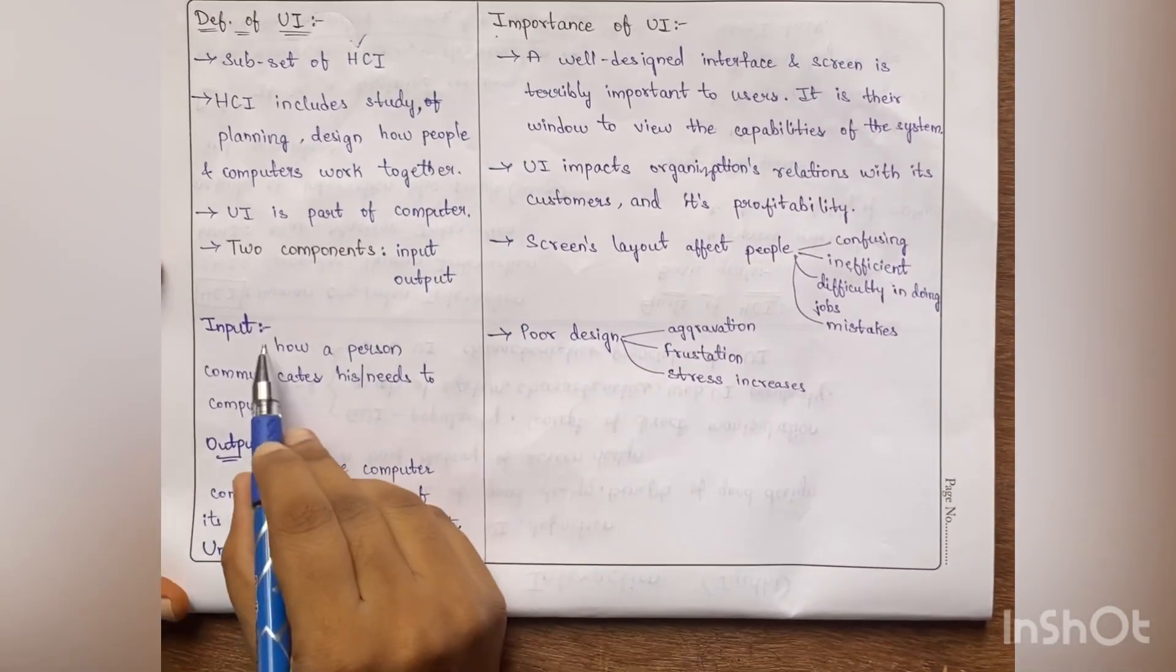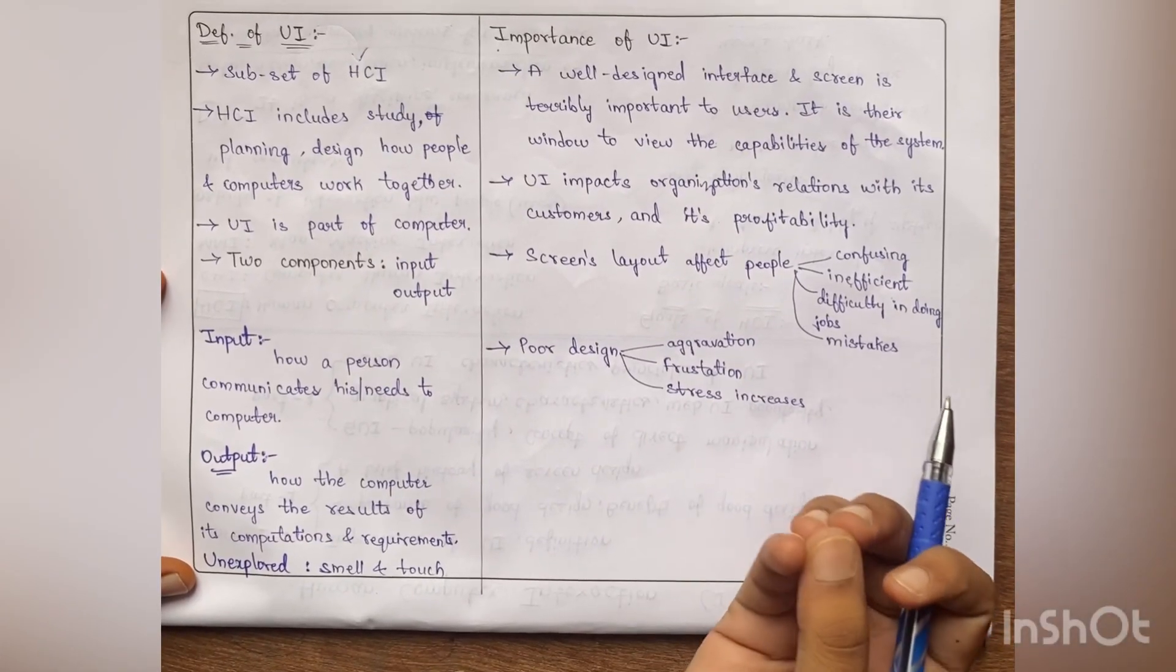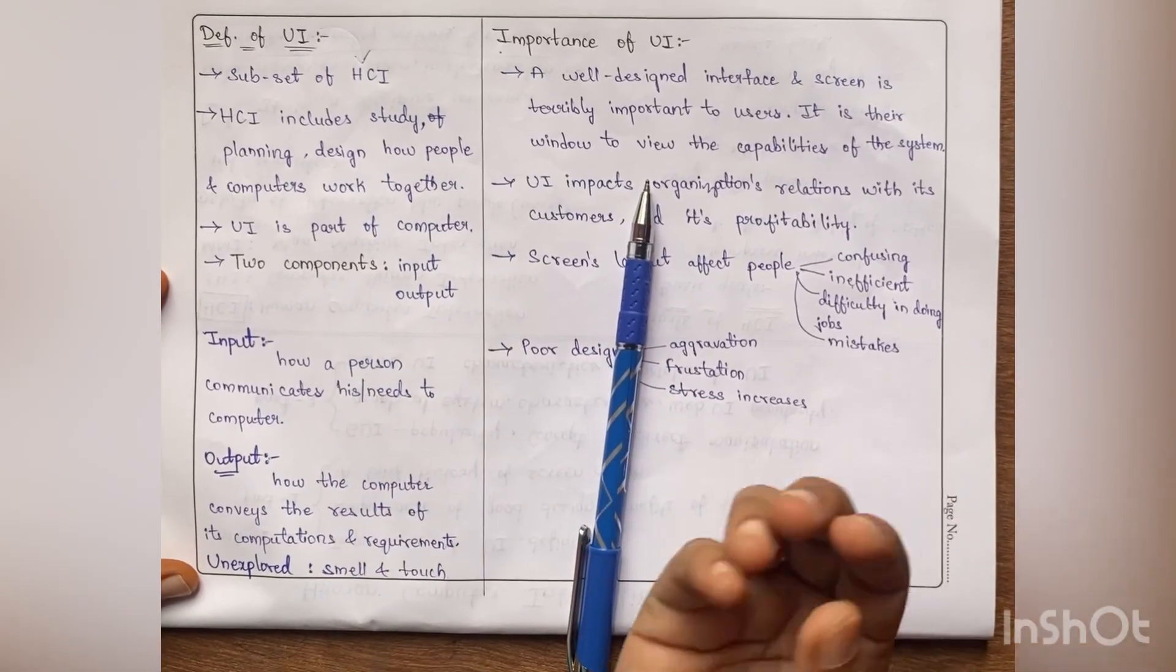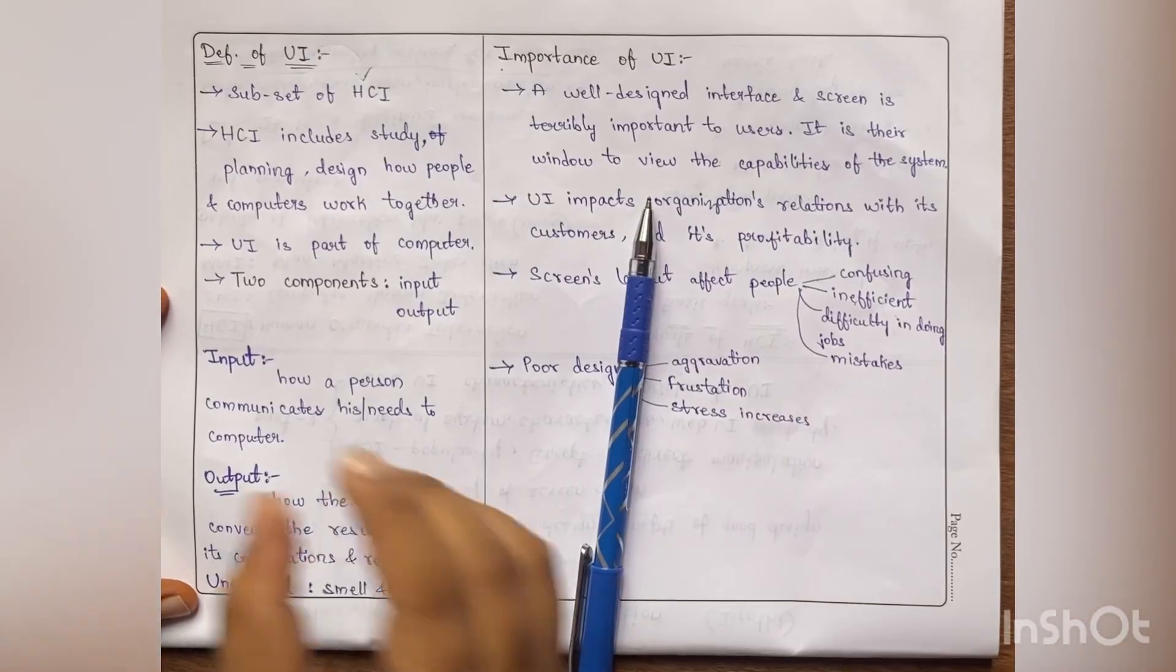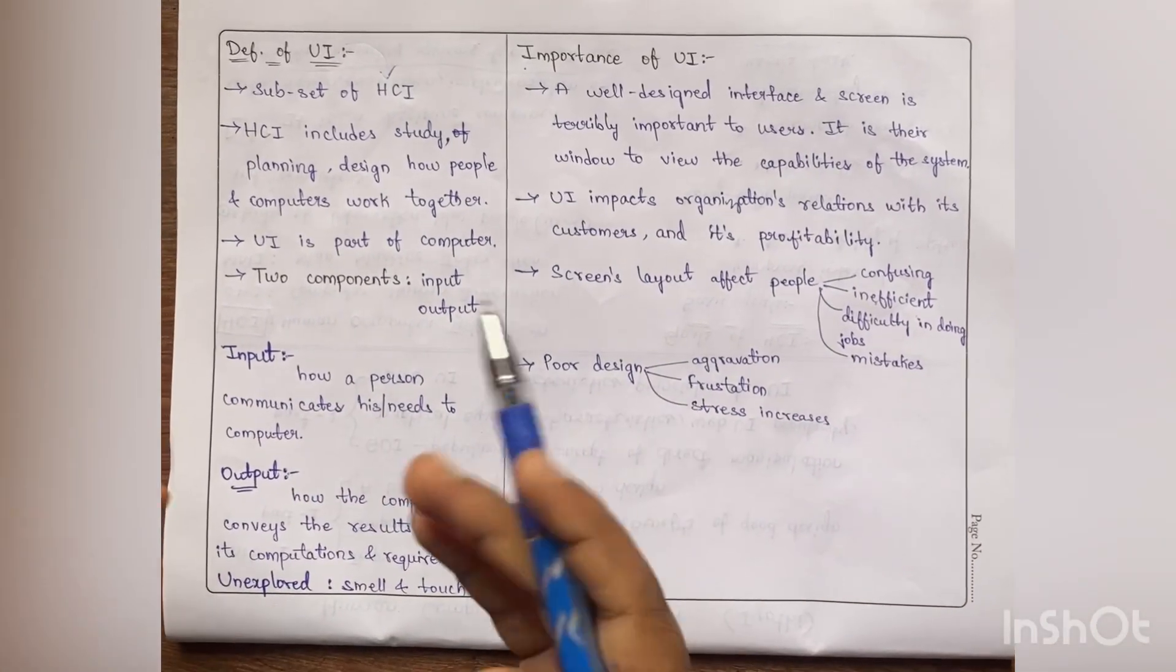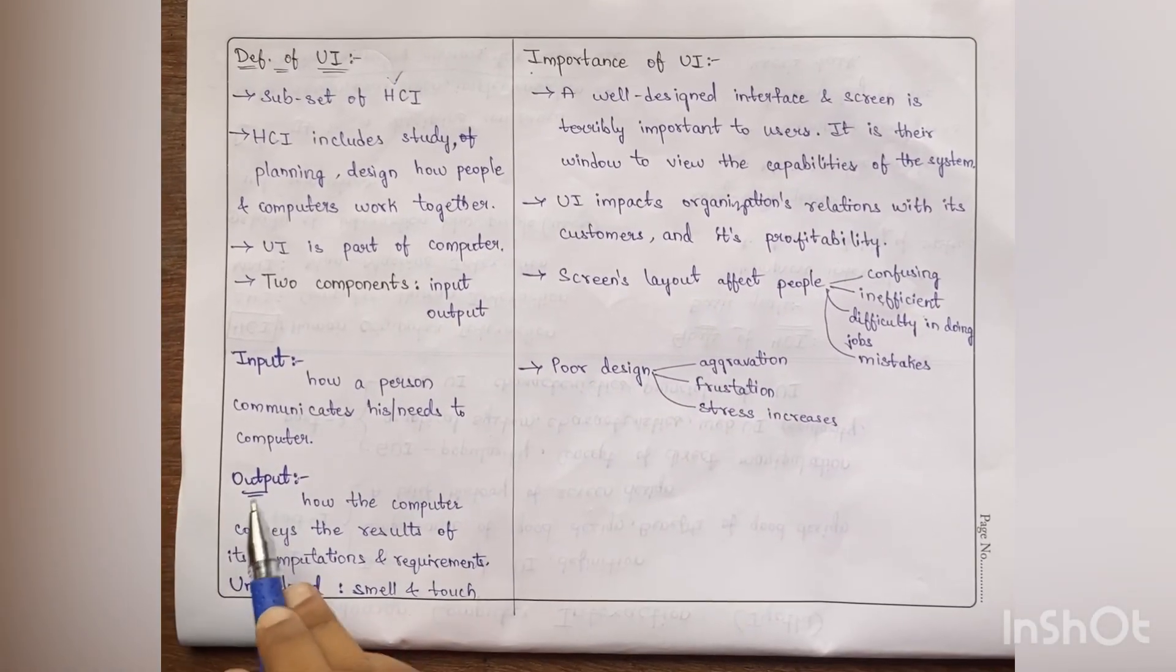Coming to input part, how a person communicates his or her needs with the computer. Say suppose he can give input to the system using a keyboard, mouse, with his voice like we have speech recognition things also nowadays. So this all comes under input part. That means how a person is able to communicate all his needs to the system.